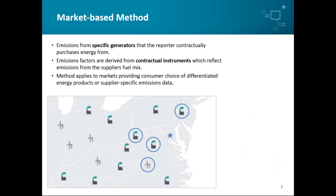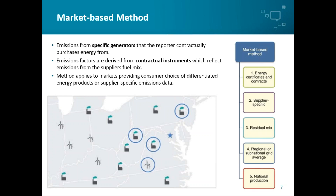In contrast, the market-based method uses emissions factors from specific generators that you're purchasing your electricity from. Emissions factors are derived from different contractual instruments such as energy attribute certificates, energy contracts, or supplier-specific emissions data — presented in the emissions factor hierarchy, which we'll discuss in more detail in the following slides. The market-based method applies to any market where there's consumer choice of different energy products or where supplier-specific emissions data is available — for example, where energy suppliers offer green tariffs, or where companies can purchase energy directly from renewable generators through power purchase agreements or other contracts.